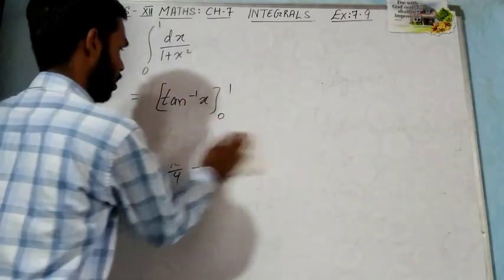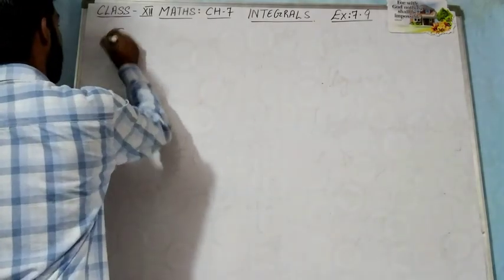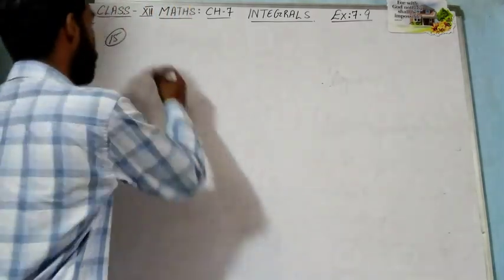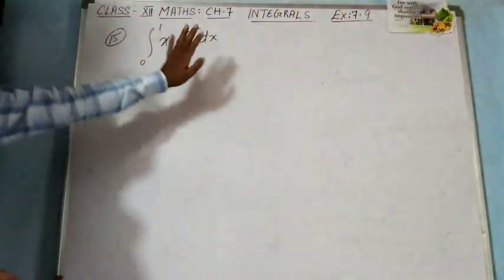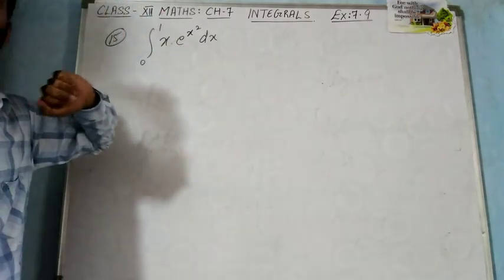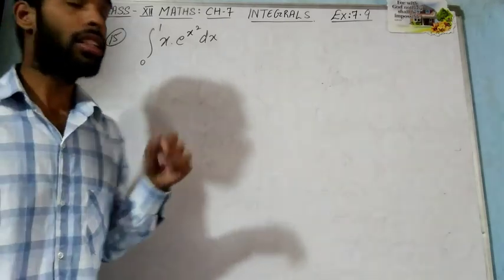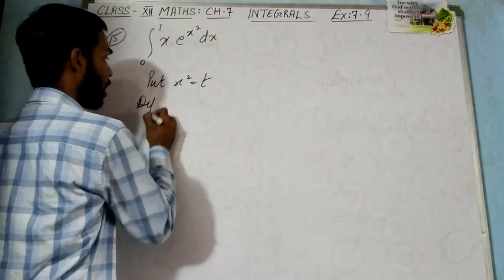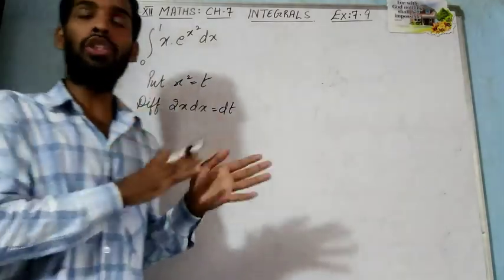Now let us do question number 15: integral from 0 to 1 of x · e^(x²) dx. Here the function is x · e^(x²) — two functions multiplied together. Do not apply integration by parts. Use the substitution method because the power of e is x², and the differentiation of x² is 2x, which is present alongside. Put x² = t.